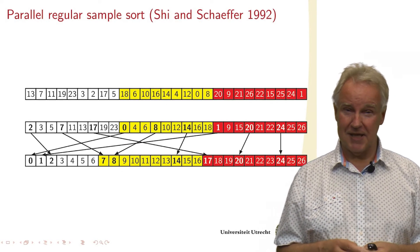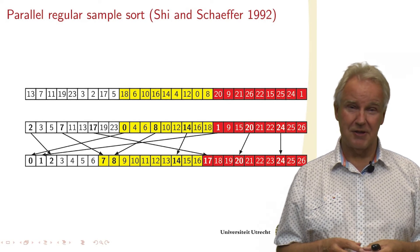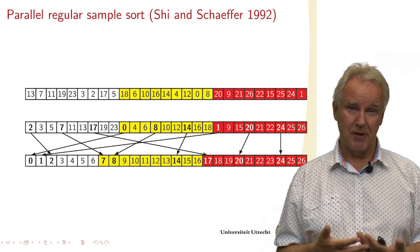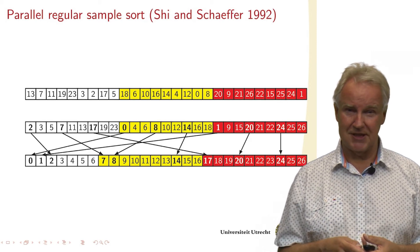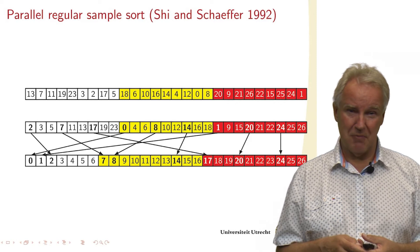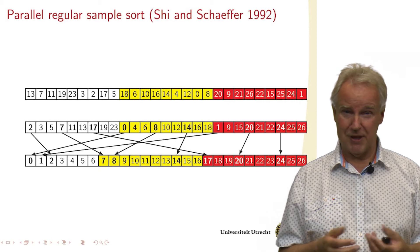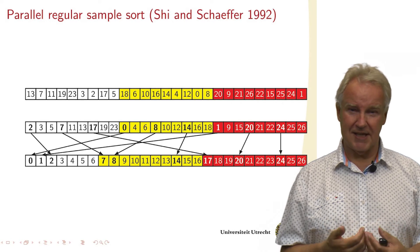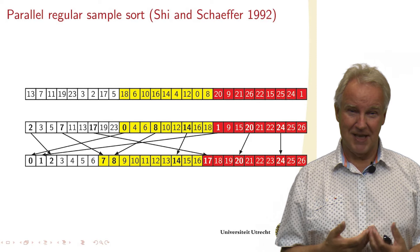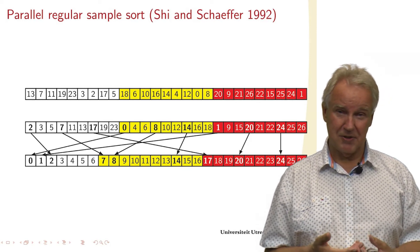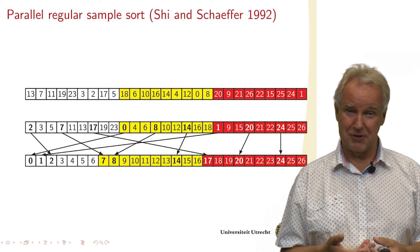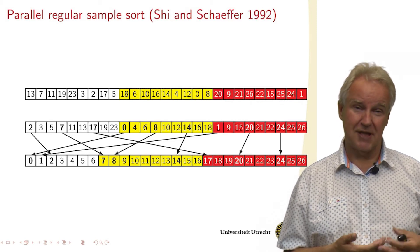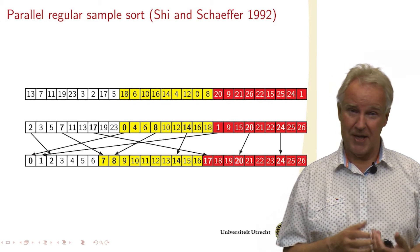Here is the basic idea of the general regular sample sort — parallel sorting. We have 27 numbers in some random order on three different processes: white, yellow, and red. What we want is that they are in perfect order at the end of the algorithm, with all elements of processor zero (white) lower than those in the yellow processor, and those in turn lower than those of the red processor.